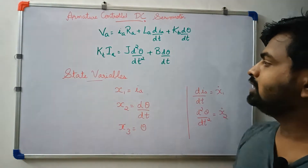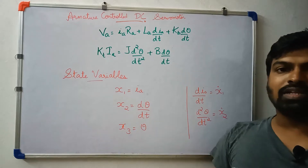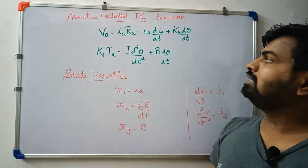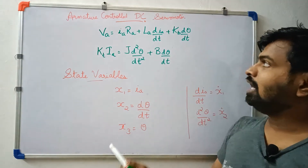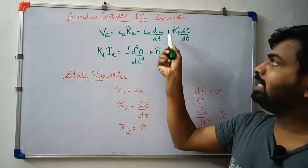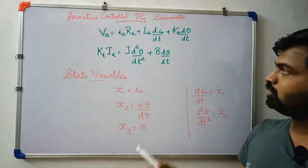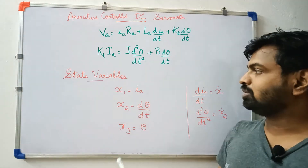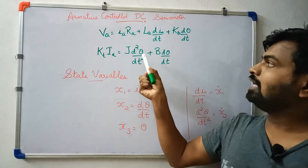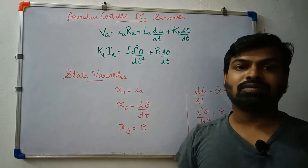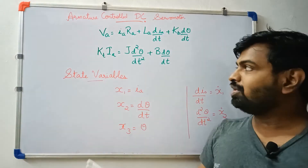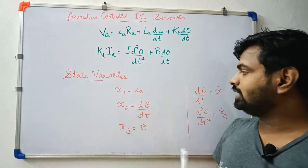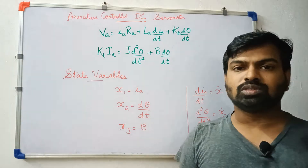Now we have a differential equation and we have to assign state variables. We have the physical variables ia and theta. We assign x1 equal to ia. We have two equations and a second order system. x2 is equal to dθ/dt and x3 is equal to theta.